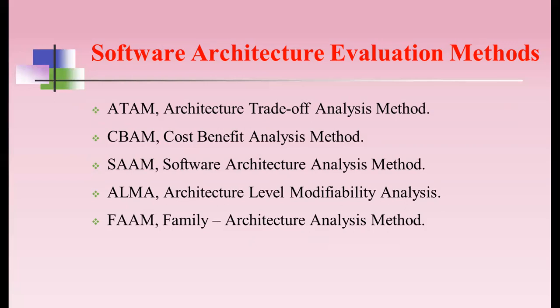Coming to CBAM — Cost Benefit Analysis Method — the main objective is to provide business measures for particular system changes, making explicit the uncertainty associated with estimates. It uses six main steps which quantify the quality benefits, costs, and schedule implications of architectural strategies. The scenarios used are direct, indirect, and exploratory scenarios, with classification counting the time and cost utilization by the scenarios. The approach in CBAM is to analyze the benefits of different architectural strategies, assess the quality, and calculate the desirability with respect to cost and time factors.